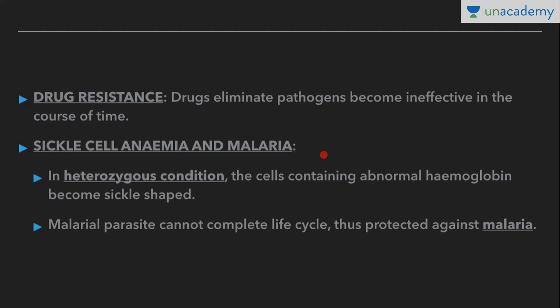The next example is sickle cell anemia and malaria. Individuals homozygous for sickle cell anemia die at an early stage. In heterozygous individuals, the RBCs contain abnormal hemoglobin and become sickle-shaped. The malarial parasite cannot complete its life cycle in these sickle-shaped RBCs, protecting them against malaria. These individuals cope with malarial infection much better than normal persons. Thus, natural selection maintains the abnormal form of hemoglobin alongside the normal form in regions where malaria is common. These are the few examples of natural selection that support its theory.